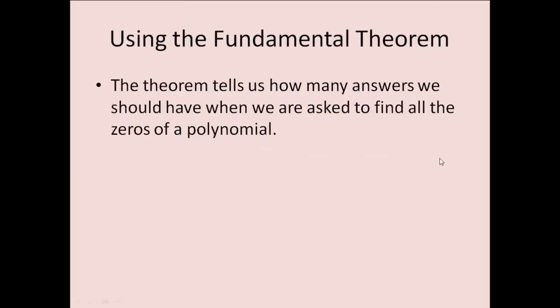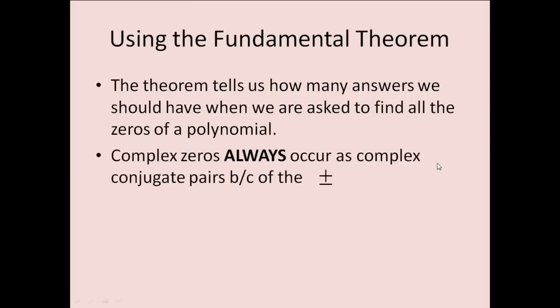This theorem lets us know how many answers we need to find. One thing to remember is that complex zeros always occur as complex conjugate pairs. That's because of our plus minus, they are always in pairs. If you think of the quadratic formula, we have that plus minus the square root of b^2 - 4ac. That's why they will always be in pairs.